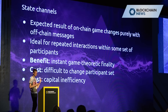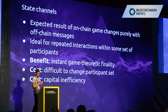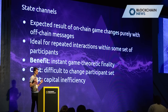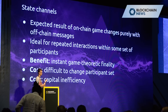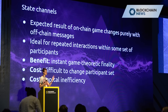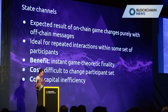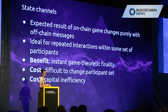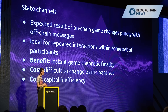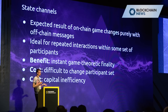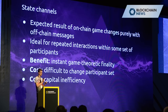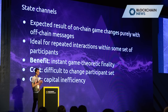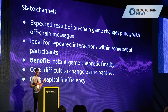State channels: the expected result of the on-chain game can change purely with off-chain messages. They're ideal for repeated interaction between participants. One benefit is that this basically solves the latency issue — you get instant game-theoretic finality. As soon as I sign the message and send you the signed message, you know that if you really wanted to, you could take the signed message, broadcast it into the mechanism on the blockchain, and get your money out. You can basically live as though you already have that money, and in some game-theoretic sense you really do, because you have the ability to get it if you wanted to. This change of the equilibrium of the game happens purely as a result of off-chain messages — the payment itself does not need to wait for confirmations. Costs: capital inefficiency, and it's difficult to change the set of participants.